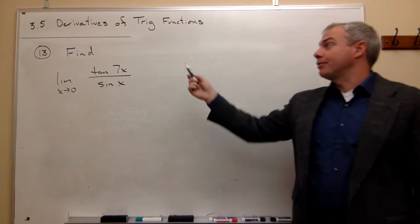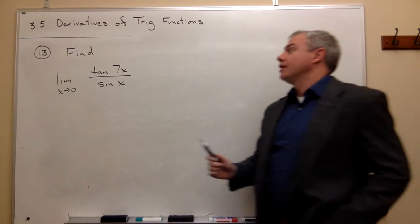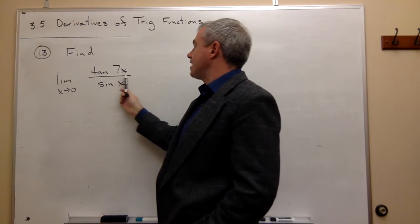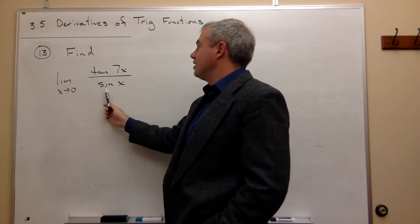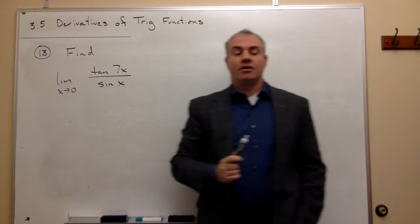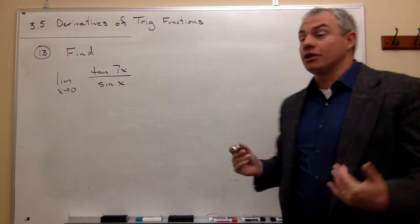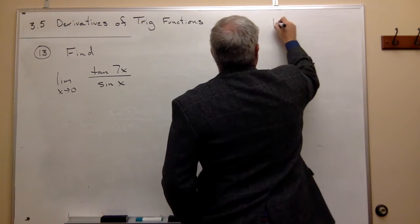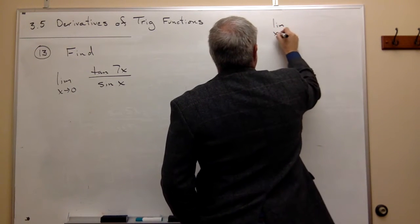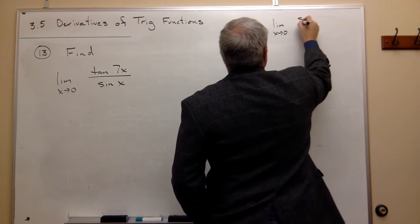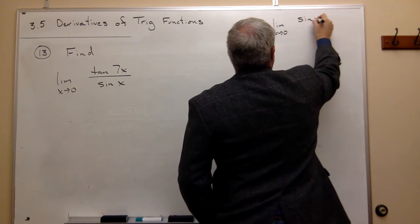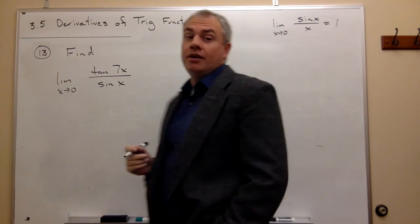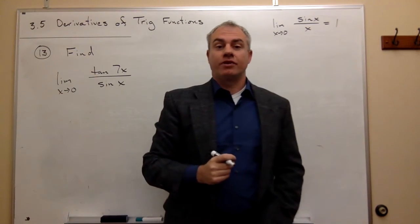Let's look at problem number 13. We'd like to find the limit as x goes to zero of tangent of 7x divided by sine of x. We still have the useful information that the limit as x goes to zero of sine x over x equals one, and we're going to use that to help us out.